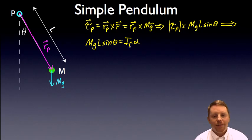But notice that alpha is going to be, our angular acceleration is going to be in the opposite direction of theta. It's a restoring force. So one of these sides has to be negative.